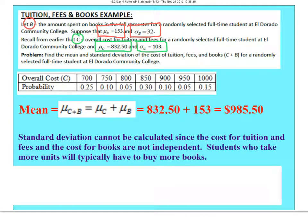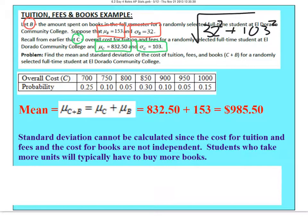Now if they were independent, here's how we would do it: take 32 squared, take 103 squared, add those two variances together, and then take the square root — that would give the new standard deviation.